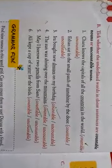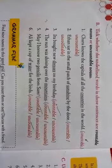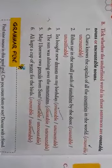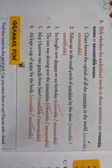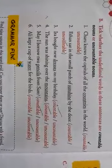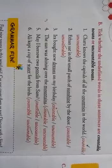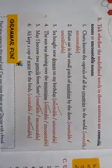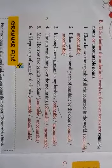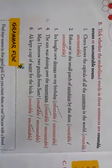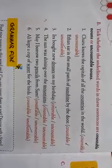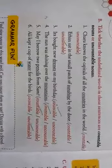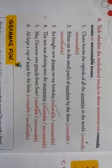Then third one: Ira bought new dresses on my birthday. The underlined word is dresses. The options are countable and uncountable nouns. The dresses of a particular person are countable, so that is a countable noun. Fourth one: the sun was shining over the mountains. Mountains are countable.